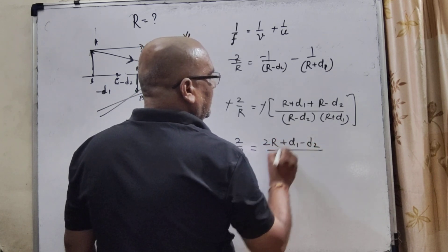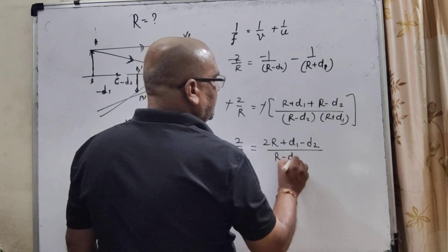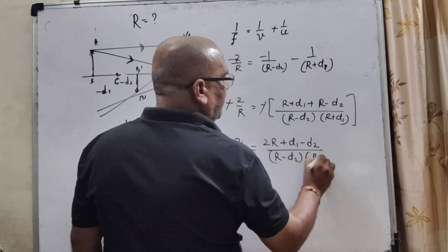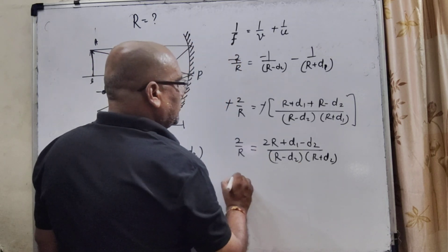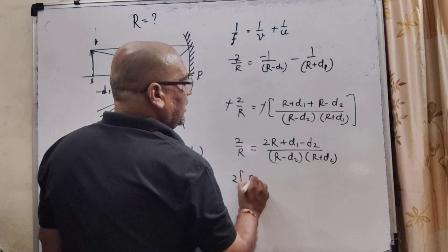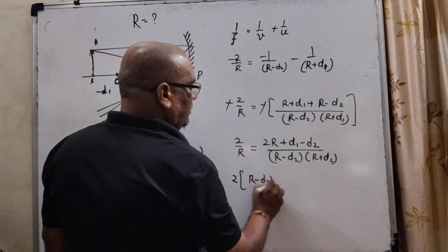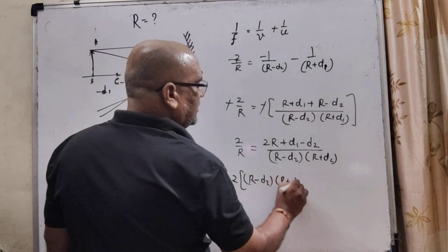Minus d2. Here, R minus d2, R plus d2, transposing to the left side. So, here, R minus d2.